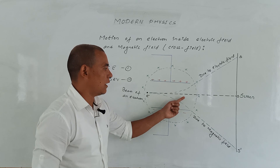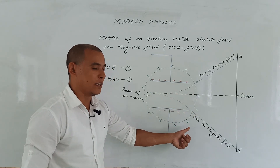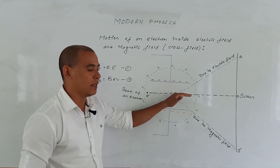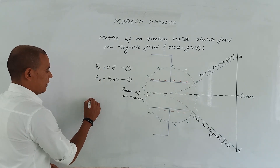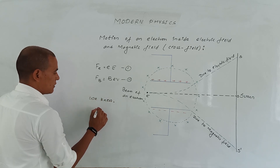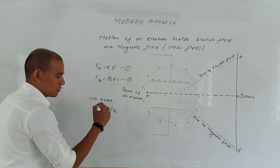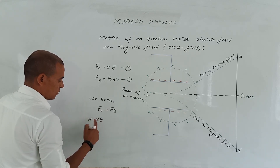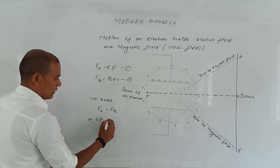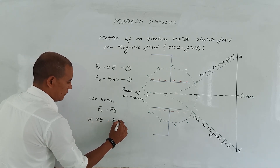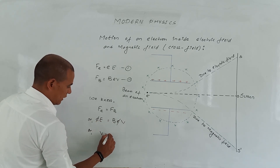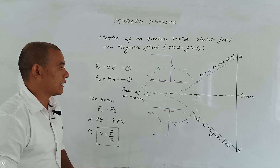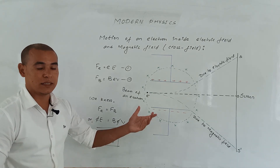Since the electron moves undeviated in the presence of both electric and magnetic fields placed perpendicular to each other, the force due to the electric field equals the force due to the magnetic field. So, Fe equals eE and FB equals eBV. The charge cancels out, giving us V equals E divided by B. From this equation we can calculate the velocity of the electron beam inside the field.